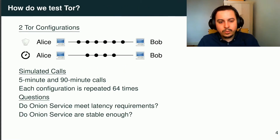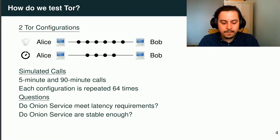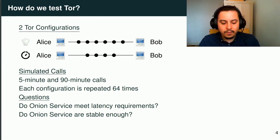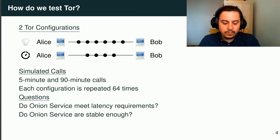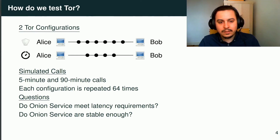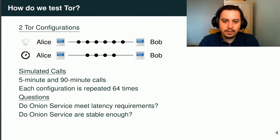Now that we have our two Tor configurations, we will simulate calls on them. More specifically, we will simulate 64 five-minute calls and 64 ninety-minute calls, and we want to see if Tor can satisfy our interactivity and stability requirements defined earlier.